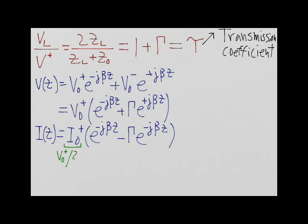Having written out V of Z and I of Z in this format, it is now easy to find expressions for the forward power P+ as well as the backward power P-. Remember that the definition of time average power is equal to one-half multiplied by the real part of V times the conjugate of I.